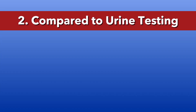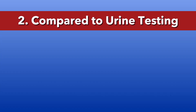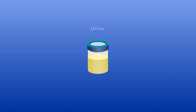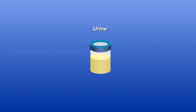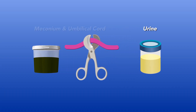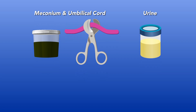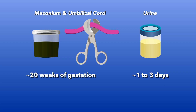When considering prenatal exposure testing, it would be remiss not to consider urine testing, but both umbilical cord tissue and meconium are considered superior to newborn urine testing for a few reasons. Urine testing has a limited detection window of up to approximately one to three days, so at best it only captures very recent use and not a full history of prenatal exposure.